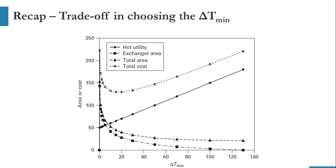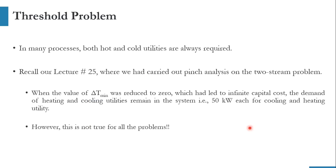That's the first part of today's activity. Now we are moving to our second part — the threshold problem. So far, we have discussed the pinched system: the system in which at a certain value of delta T minimum, the overall system is divided into two conditions — above pinch and below pinch. For above pinch, hot utility was needed; for below pinch, cold utility was needed. But that is not always true.